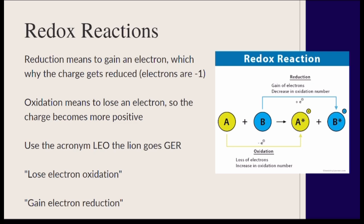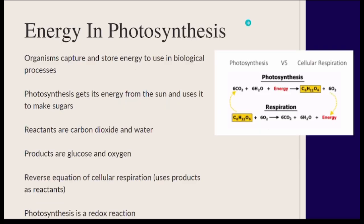Topic 3.5 is photosynthesis. Both photosynthesis and respiration are redox reactions. Reduction means to gain an electron, and oxidation means to lose an electron. Since electrons are negative, when you gain one your oxidation number goes down — it's reduced. A helpful acronym is LEO the lion says GER: Lose Electrons Oxidation, Gain Electrons Reduction.